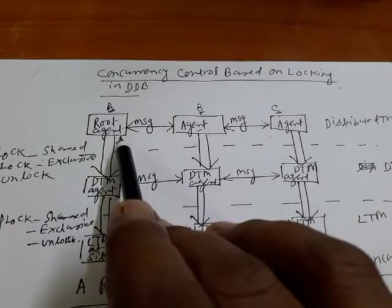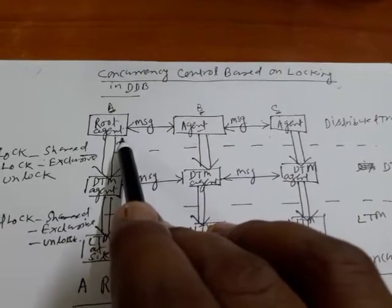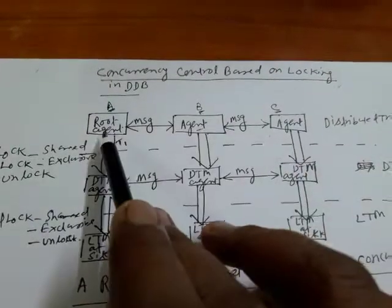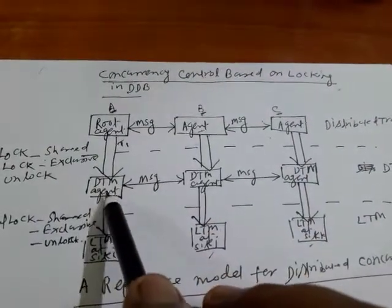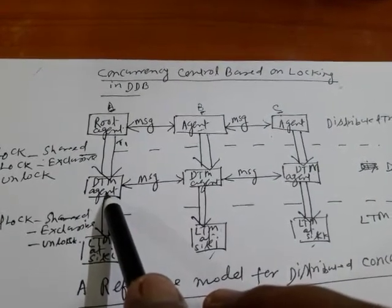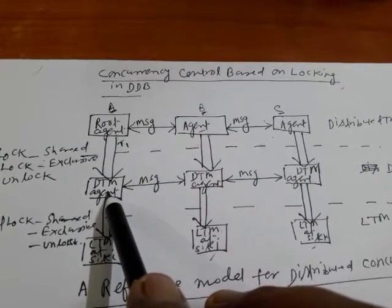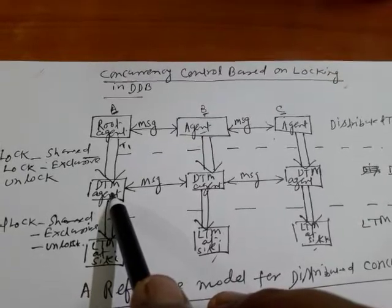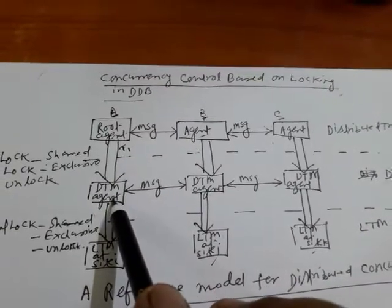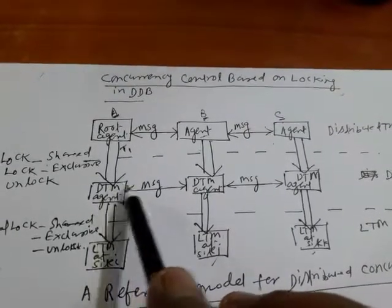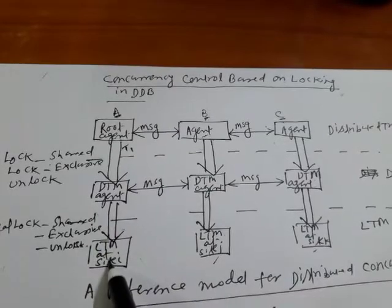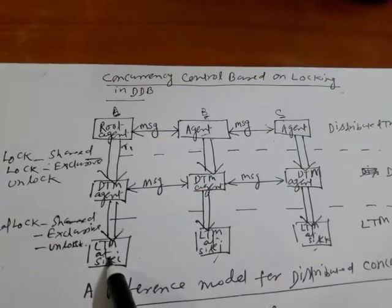When I click on transfer, I put in two accounts B and C. The root agent communicates with the DTM. DTM checks whether B and C are added as beneficiaries in your account. If they are not added, you are not able to transfer. If they are added, then we move to the next part — specifying how much amount to transfer.